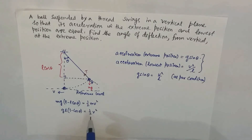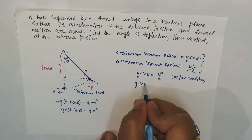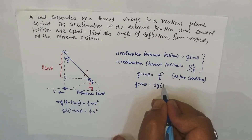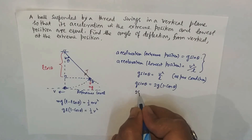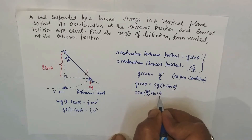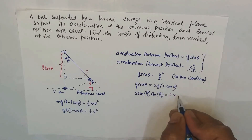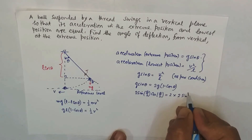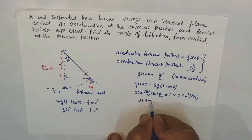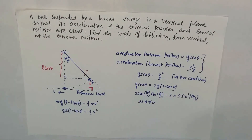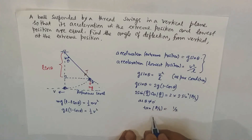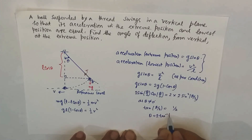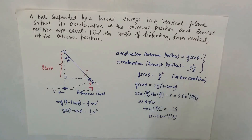Substituting v squared by L: g sin theta equals 2g(1 minus cos theta). Cancelling g, and since theta is not zero, we use the identities sin theta = 2 sin(theta/2) cos(theta/2) and 1 minus cos theta = 2 sin squared(theta/2). Cancelling sin(theta/2) from both sides gives tan(theta/2) equals one half. Therefore theta equals 2 tan inverse (1/2), which is the required angle.